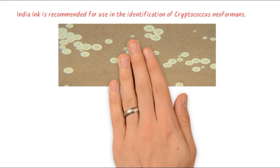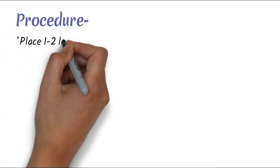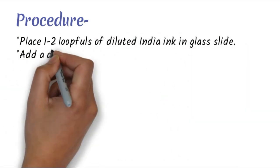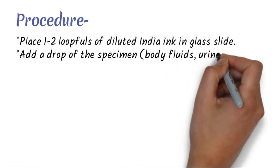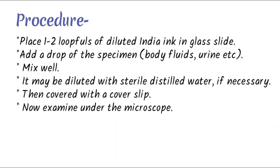In the image, the background should ideally be brownish in color, not bluish or blackish. The procedure for India ink: place one to two drops of diluted India ink on a glass slide, add a drop of specimen such as body fluid or urine, mix well. If the specimen is thick, dilute with distilled water if necessary. Cover with a cover slip and examine under the microscope.